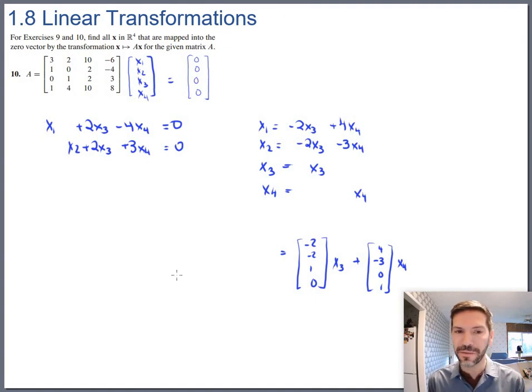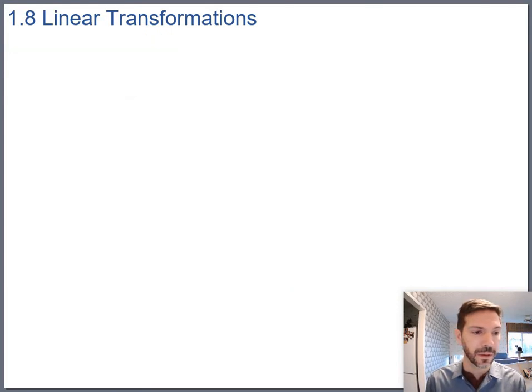Abel always feels a little more comfortable in his mathematical soul if he writes these out in vector form. So that vector times x3 and 4, negative 3, 0, 1 times x4. Those are all of the vectors that when you multiply them by A, produce the zero vector. Later in the course, we're going to get a new vocab word called the kernel spelled with a K. That is what we just found. Kernels, all the vectors that map to zero through a particular transformation.